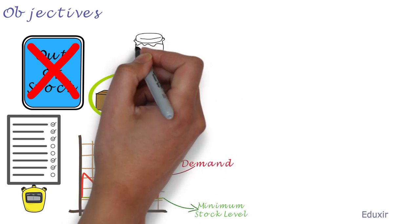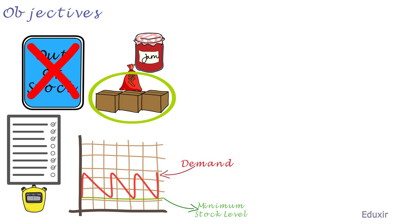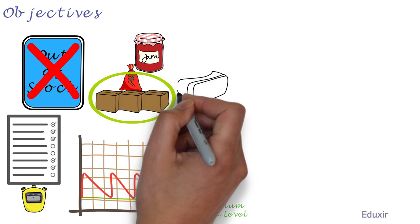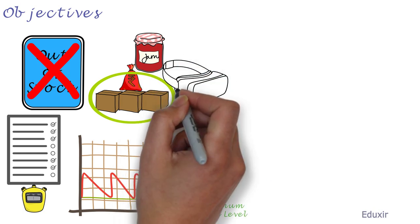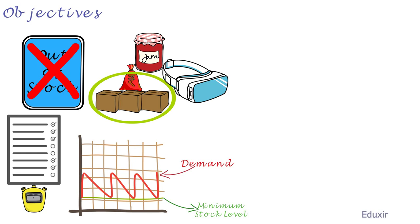If the business is maintaining some perishable stocks, it is possible that there will be deterioration of these items. And if the business is maintaining products which use advanced technology, then it is possible that very soon these products will become obsolete. If the business maintains a huge stock of these, it is likely to run into losses. Maintaining a smaller stock will enable the business to ensure that the stock is finished before it becomes obsolete. In the case of perishable products, the business can finish the stock before it deteriorates.